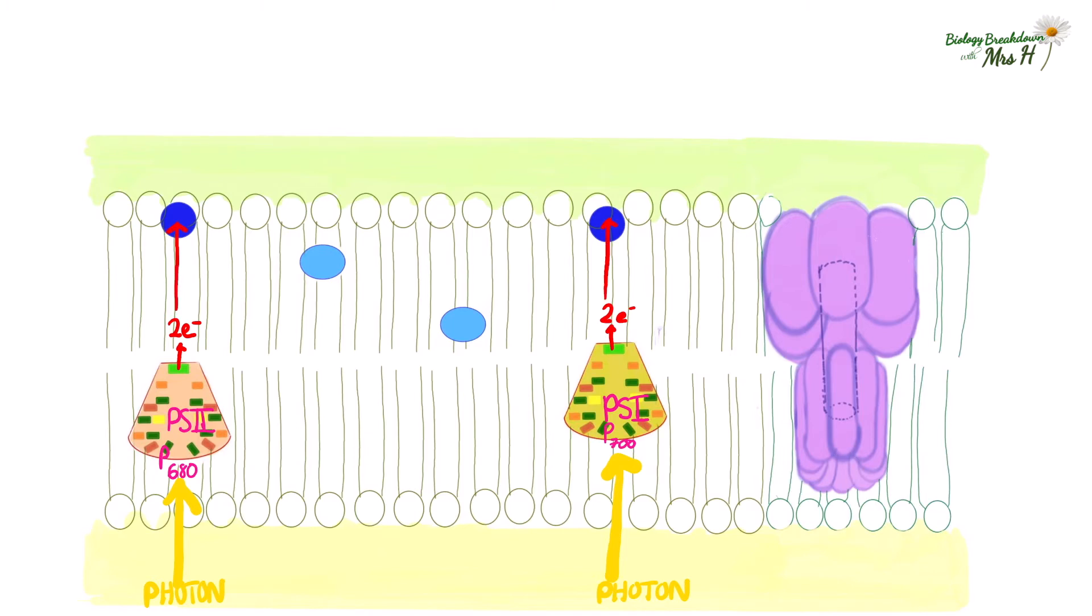These electrons are accepted by primary acceptors which will be proteins of some sort. And the photoexcitation has now created these electron holes in the photosystem. The electron hole at photosystem 1 is filled as electrons pass along a chain of carriers called an electron transport chain from the primary acceptor for photosystem 2.